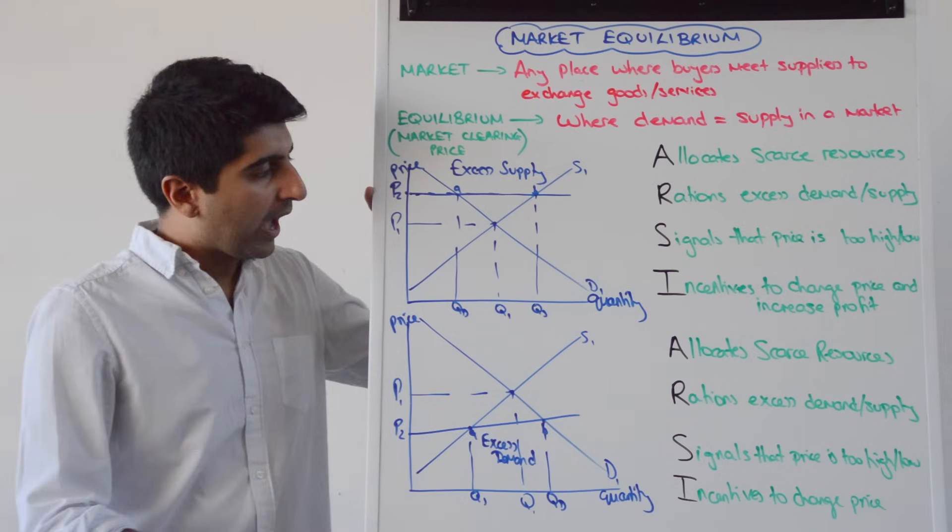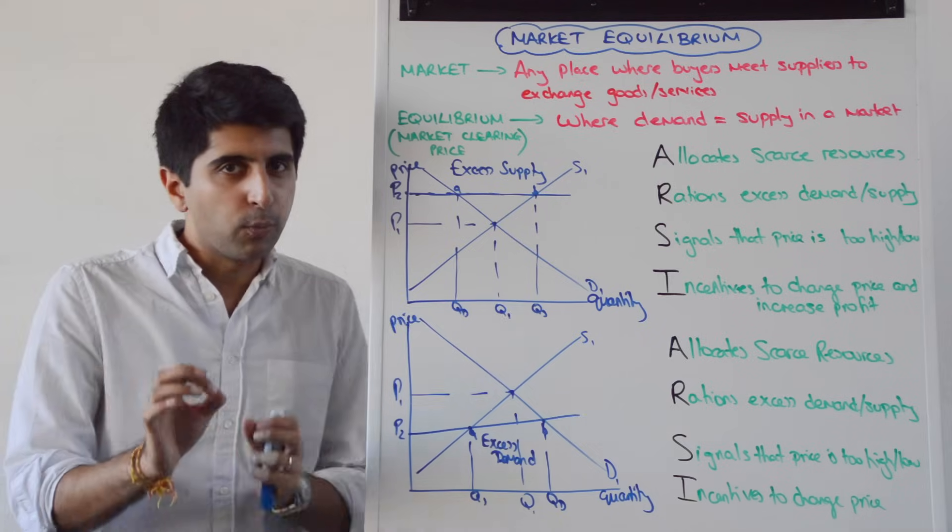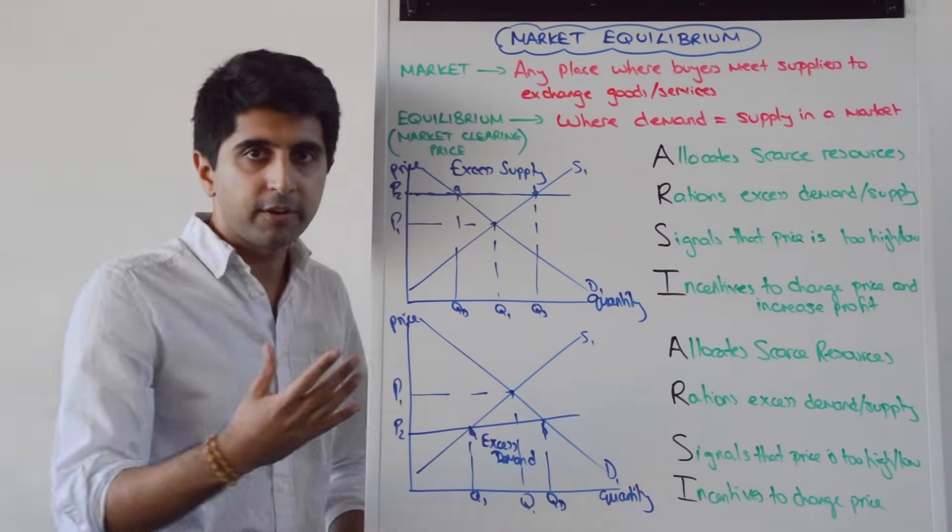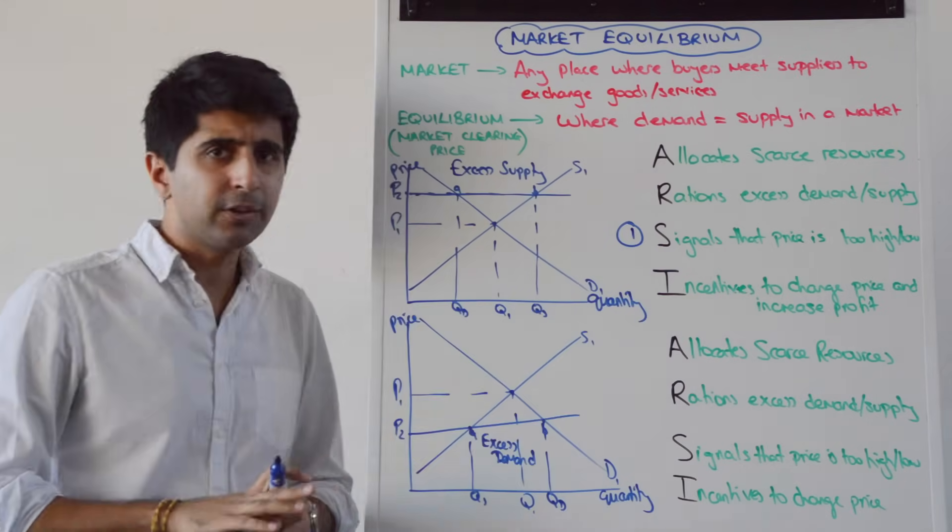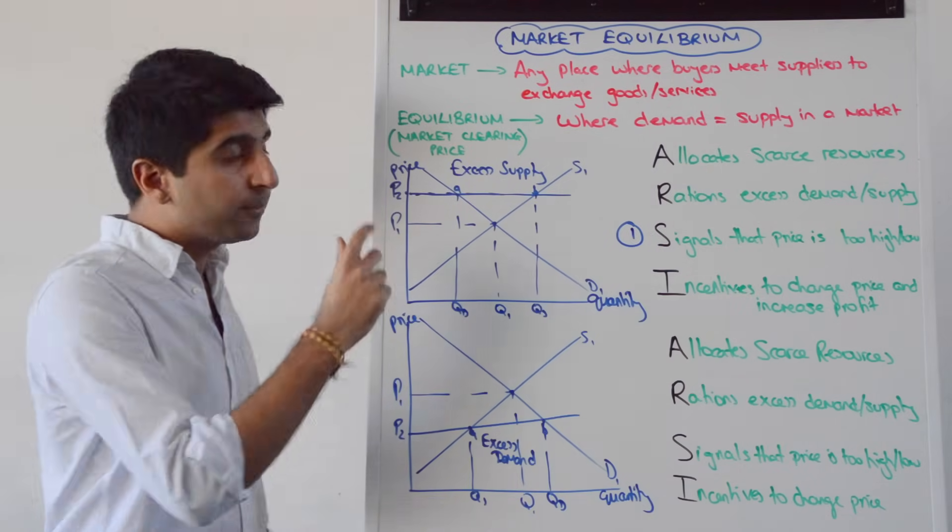a price of P2 and the issue of excess supply would not last. Why? How do the functions of the price mechanism get to work?